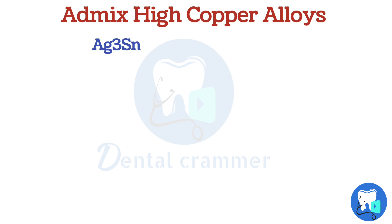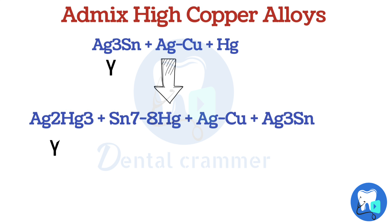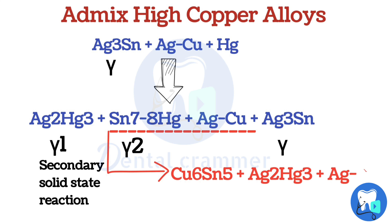Studying the setting reaction of admix high copper alloys: the initial reaction produces gamma 1 phase, gamma 2 phase, gamma phase, and unreacted silver copper alloy. A secondary solid-state reaction then occurs between the gamma 2 phase and the silver copper eutectic alloy, which eliminates the gamma 2 phase. The gamma 2 phase is replaced by eta phase, which surrounds the silver copper eutectic alloy.